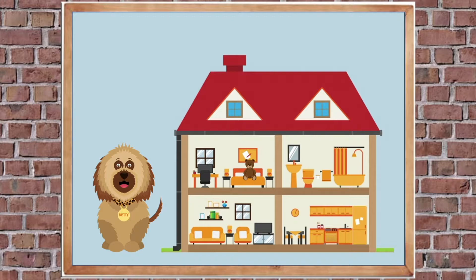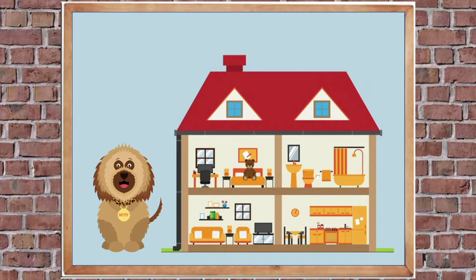Let's do the first one together. Which room is under the bathroom? Find the bathroom, then look for what's underneath it. Here's another clue — it's next to the living room. So it's under the bathroom and next to the living room. Yes, it's the kitchen! Next question: which room is above the living room? Find the living room — which room is above it? Yes, it's the bedroom!